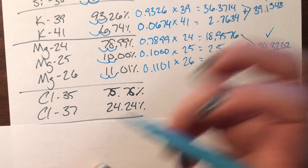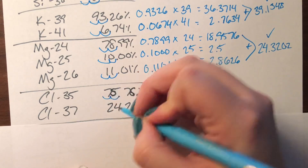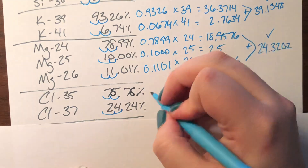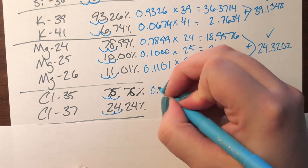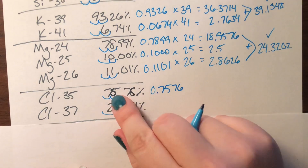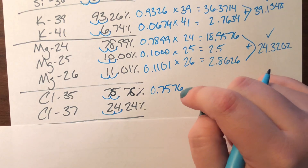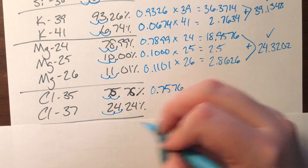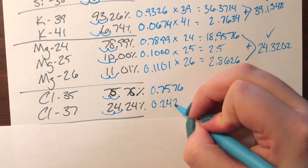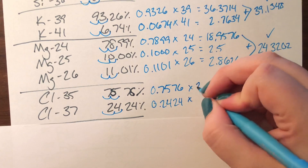Now we have chlorine-35 and chlorine-37, with their respective percent abundances. Converting to decimals: 75.76% becomes 0.7576 — I know this is difficult to read, so I apologize — and 24.24% becomes 0.2424. We multiply those by their respective masses.